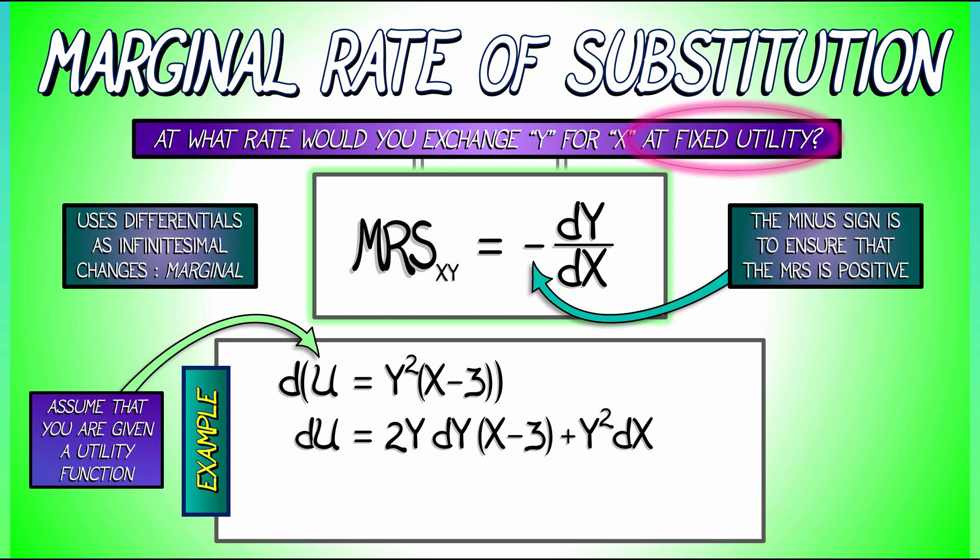Now remember, this is all in the context of fixed utility, a utility curve where U is equal to a constant. What does that mean about dU? That means that dU vanishes. It is zero. And we now have an equation that we can solve for the MRS.